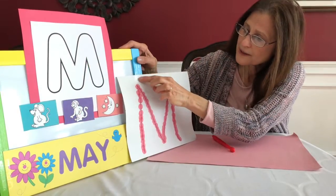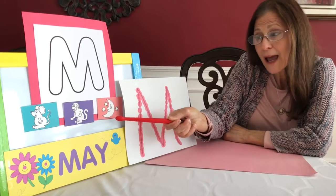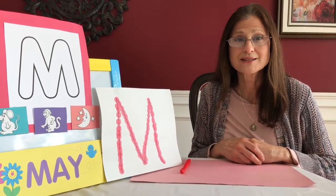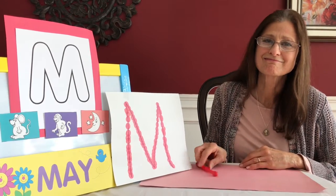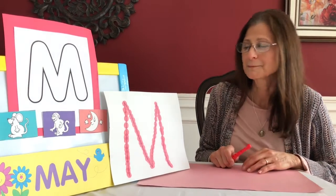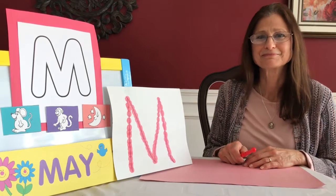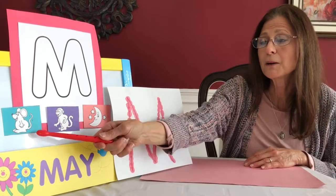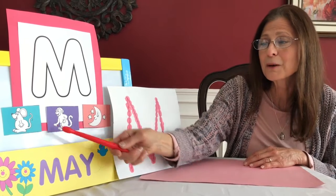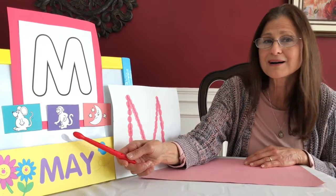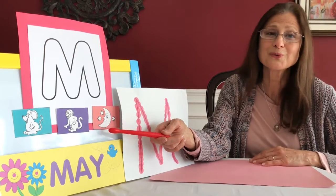I'm going to place my letter M right here next to my M words — mouse, monkey, and moon. Boys and girls, now we are going to listen to a song about the letter M. M is for m-m-m-mouse, m-m-mouse, m-m-mouse. M is for m-m-monkey, m-m-monkey. M is for m-m-m-moon.